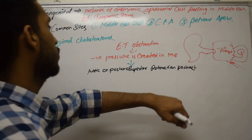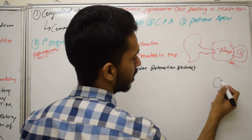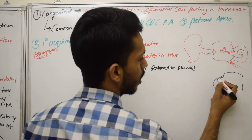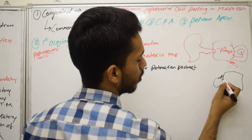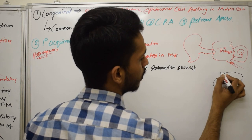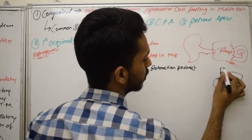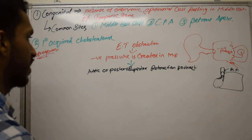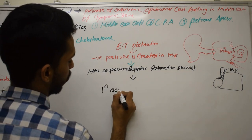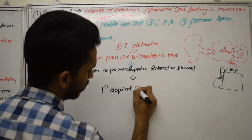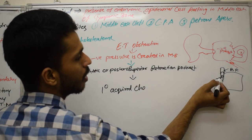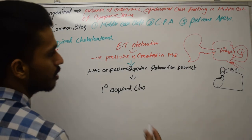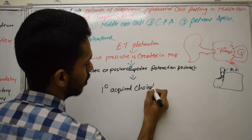A retraction pocket is when, due to negative pressure, there is an outgrowth of the tympanic membrane inside the middle ear cleft, which increases continuously. This attic or posterior superior retraction pocket leads to primary acquired Cholesteatoma, because the tympanic membrane is growing abnormally in a region where it should not be — which is essentially what Cholesteatoma is.